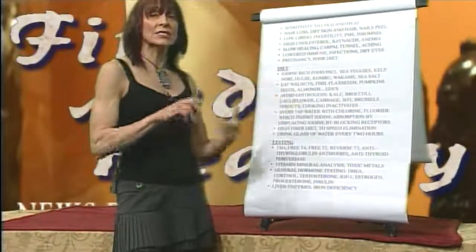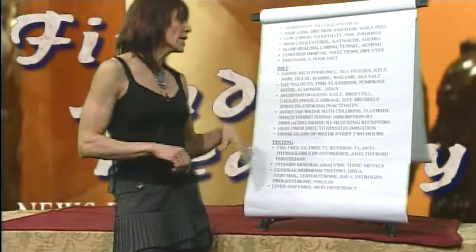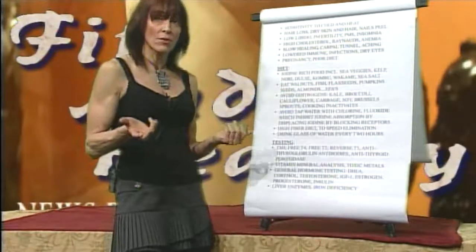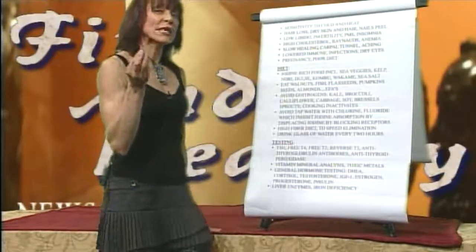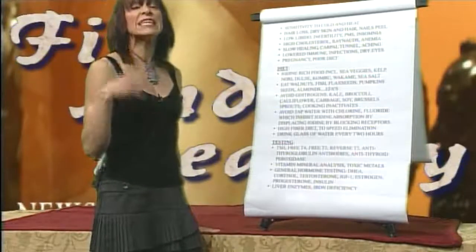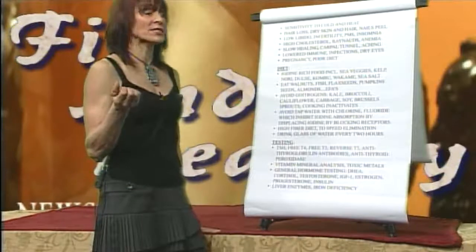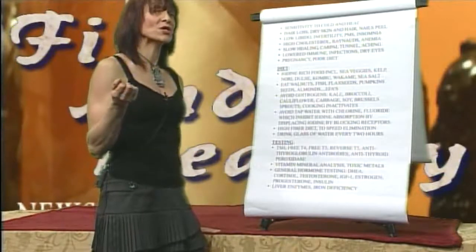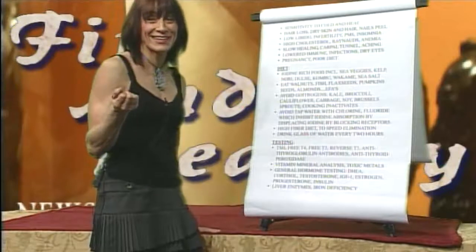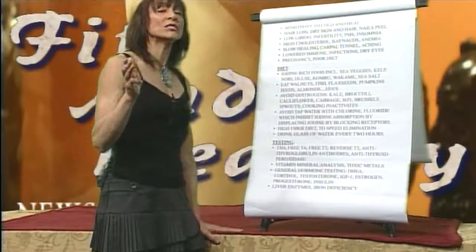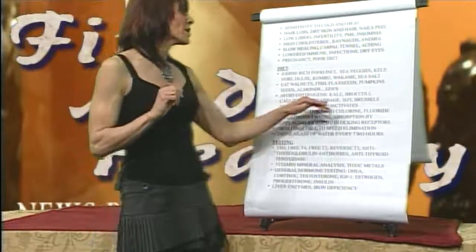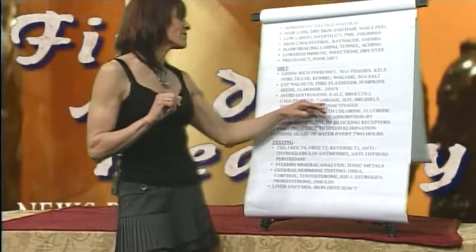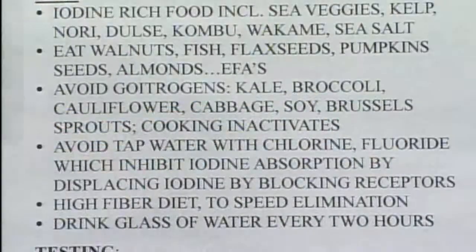Eating essential fatty acids — walnuts, almonds, pecans, pumpkin seeds — those essential fatty acids help with hormonal stabilization. There's also a certain class of vegetables you shouldn't eat a lot of if you have an underactive thyroid. When cooked, it neutralizes the effects that can slow the thyroid. But uncooked kale, broccoli, cauliflower, cabbage, soy, and Brussels sprouts — if you have an underactive thyroid, you should avoid eating these raw.